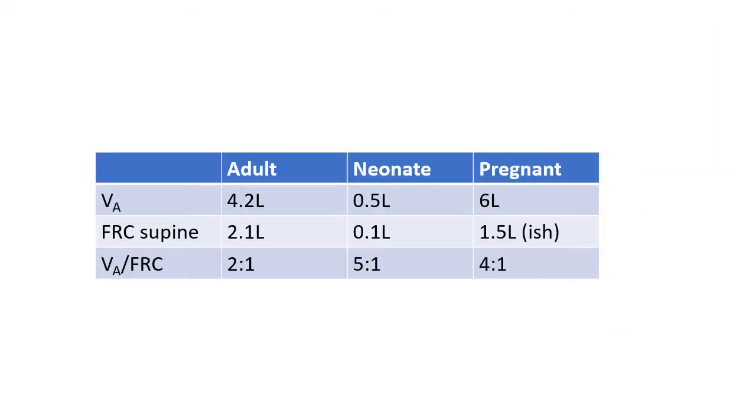You will often hear that gas induction in adults is slow because they have a larger functional residual capacity. This is not the case. In fact, adjusting for body weight, FRC is quite constant from a young age, at about 30 milliliters per kilogram in the supine position. However, minute ventilation in the child is twice that of the adult.